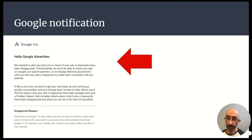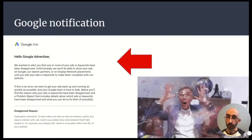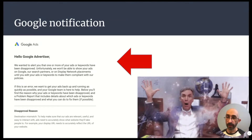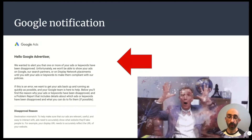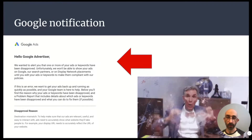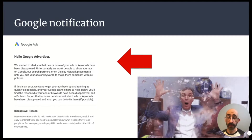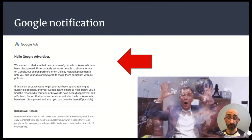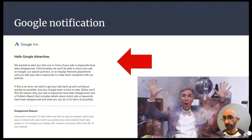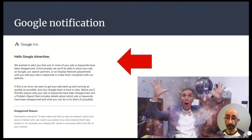This particular one is the destination mismatch from the website itself. That means that your display URL is going to a URL that doesn't match. Maybe you have a subdomain that you set up for specific landing pages but you have the URL displaying the main domain, and so that causes a conflict. You want to make sure that you're matching the URL in the ad to the actual URL of the landing page.